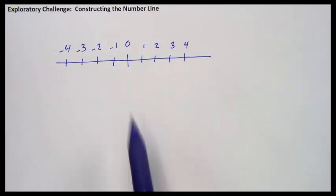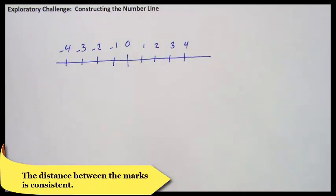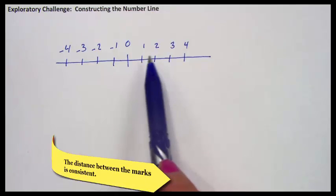What is important is that the distance between your marks is the same or close to the same. If I have a jump of one, if I'm counting by ones, then this distance between zero and one should be the same as the distance between one and two.